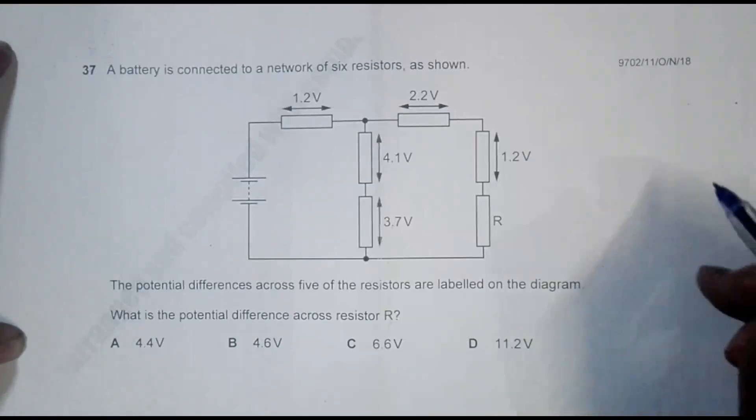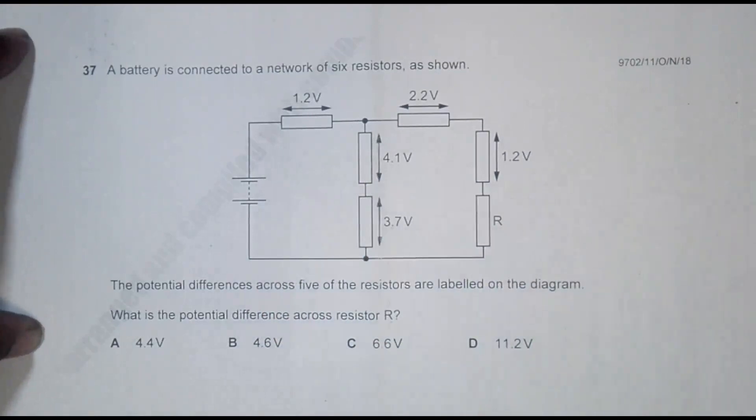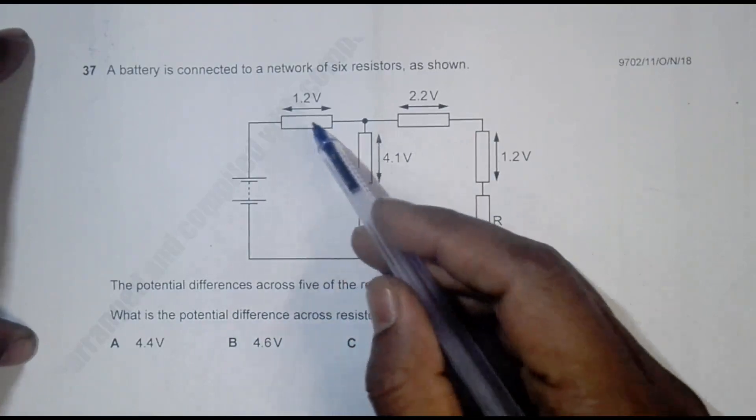Hello folks, this is 2018 October November paper 1 question 1, concerned with current electricity. A battery is connected to a network of six resistors, so there are altogether six resistors here.